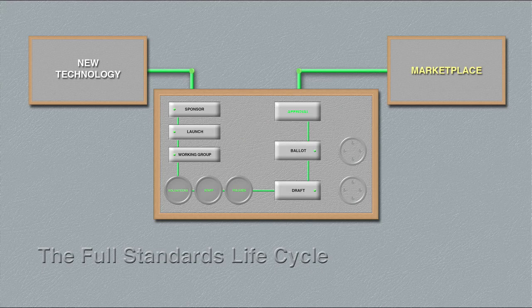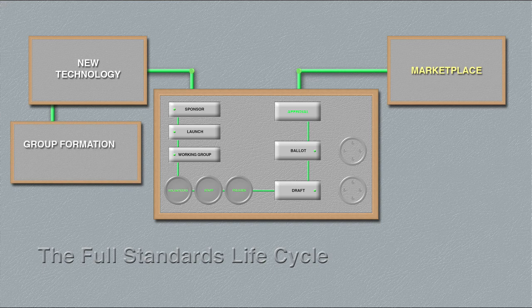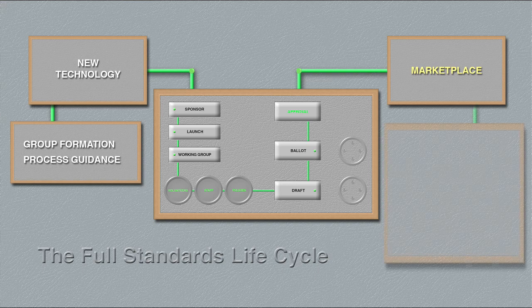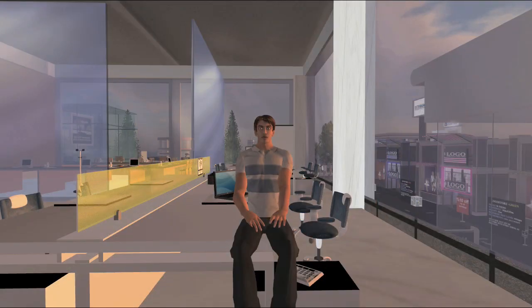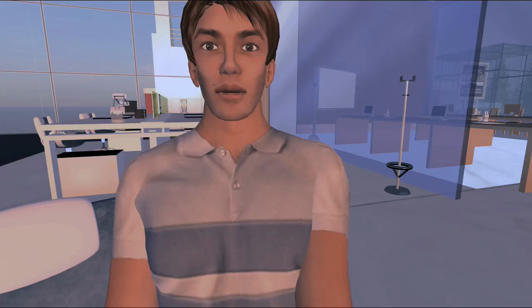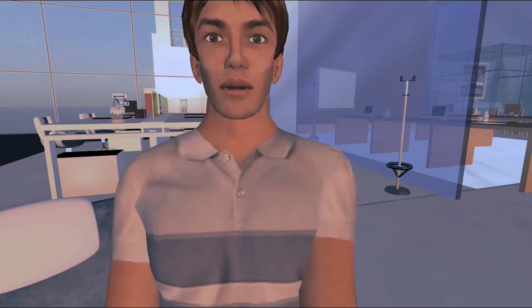The SA can guide a potential project through the process of assembling an appropriate group. When the time comes, the SA guides the group through its standards process, from permission to launch a standards project to ultimate approval, and even beyond to marketing services, public data registries, consortium creation, and liaisons with other IEEE entities and services. So, the standards life cycle takes the traditional consensus standards and adds value, from customized services to positioning the work within a larger framework.